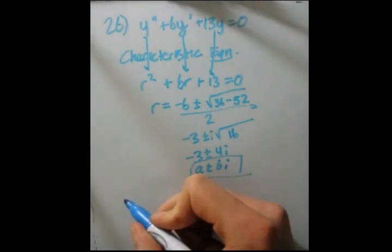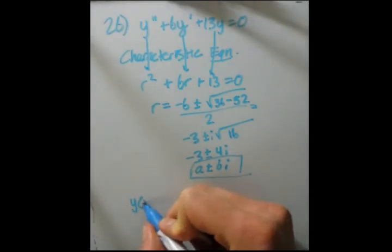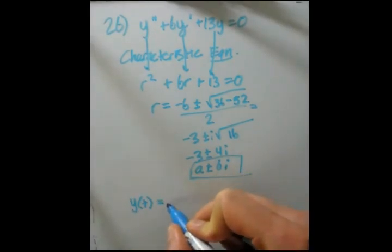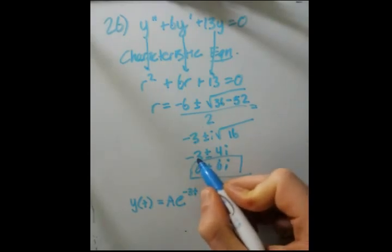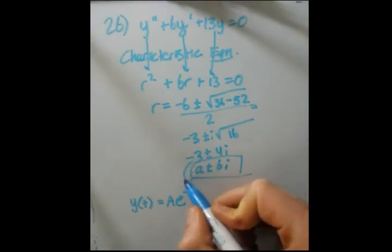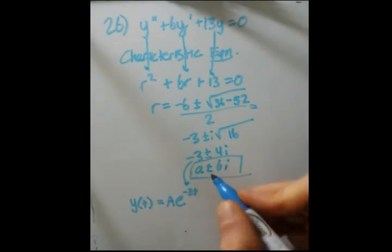So in this form, we just pull those constants right from here. a is negative 3 and b is 4. So our solution in this case, y of t equals, and we can call these constants anything. I usually use a and b instead of c1 or c2.